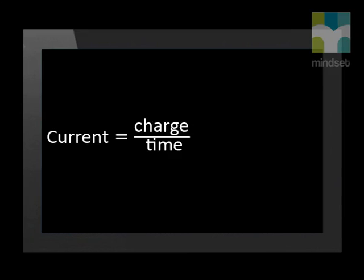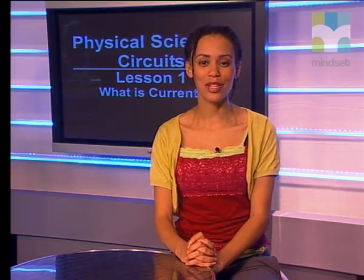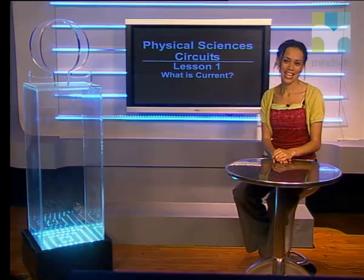Current is defined as the rate of flow of charge in a conductor. Current depends on the quantity of charge as well as the time the charge takes to go around the circuit. In our next lesson, we will see how we can use this information to define an equation and use it to calculate values in a circuit.